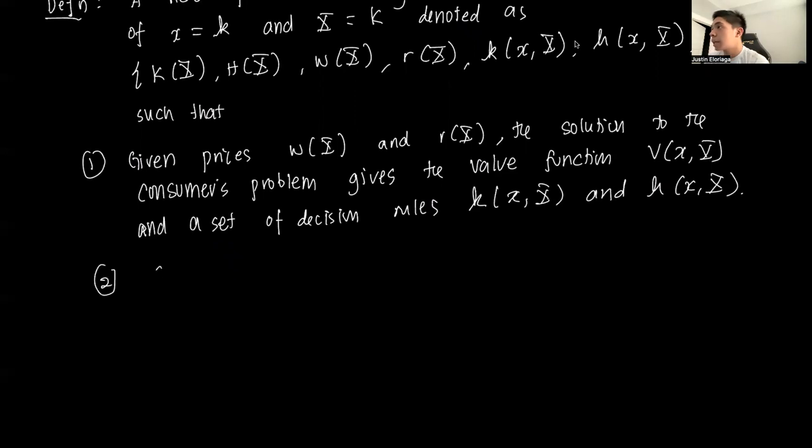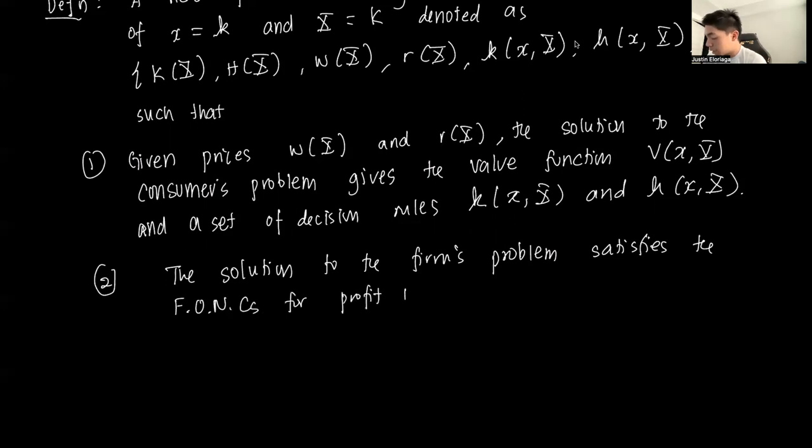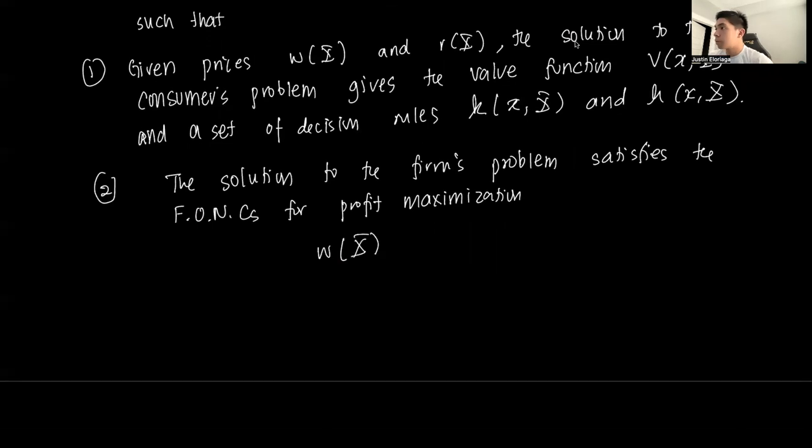The second: the solution to the firm's problem satisfies the FOCs for profit maximization. So we have that W(X) equals F_H(H,K), and R equals F_K(H,K). So this is just MPL equals the wage rate, MPK equals the rent rate.